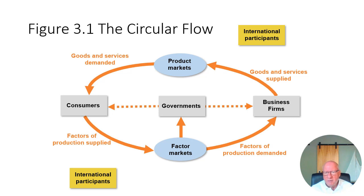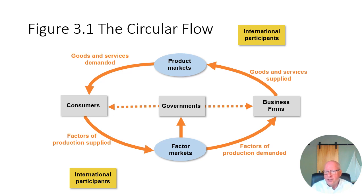Governments get involved with both consumers and business firms. Setting up schools is a clear example — households and consumers use government schools. Business firms also use things that government produces. When government produces court systems, for instance, if a business person tries to renege on a contract, you would sue them in a government-run court. Or if a business person harms you with a bad product and you want to sue them, you do that in a government-run court. So people deal with governments all the time, even in market systems.